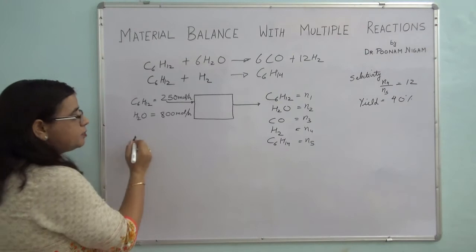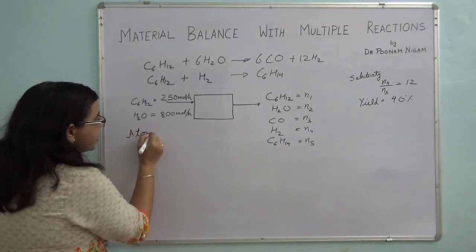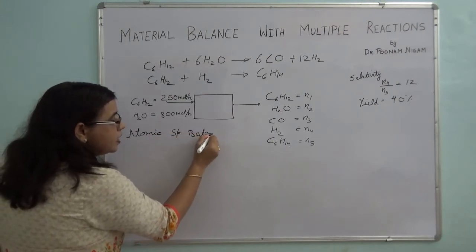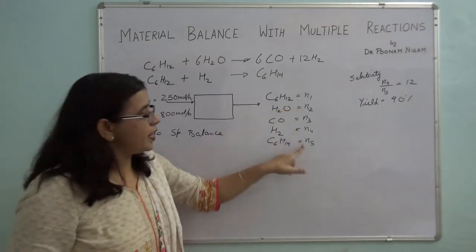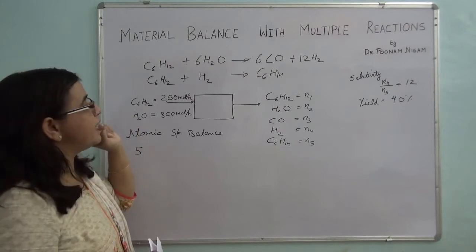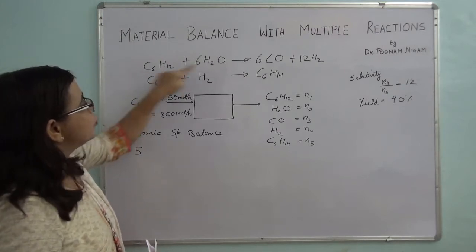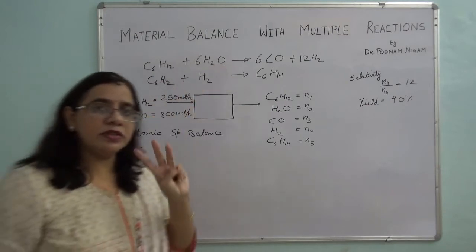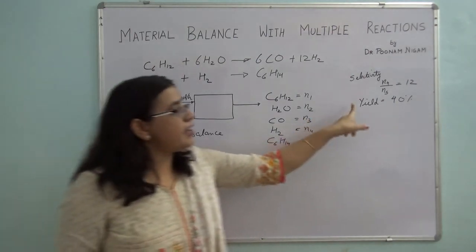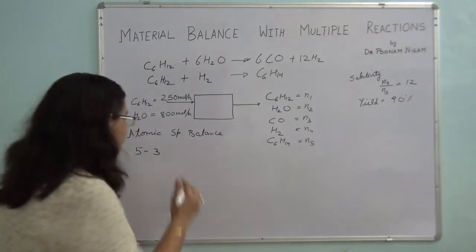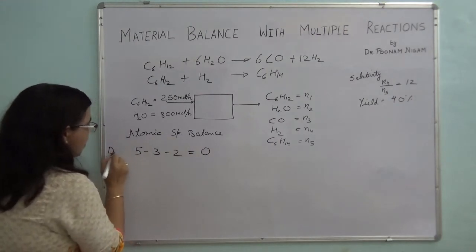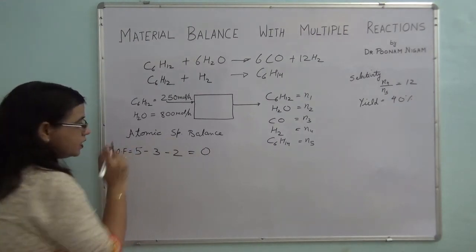Let's first start with the atomic species balance. I will do a degree of freedom analysis quickly. How many unknowns do I have? Five. How many independent atomic species balances? We have carbon, hydrogen, and oxygen — so three. That gives five minus three, minus two process specifications, equals zero. So the degree of freedom for this system is zero.